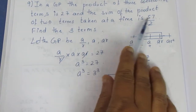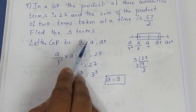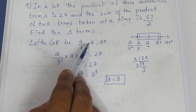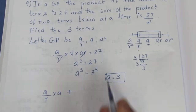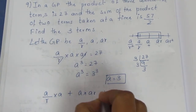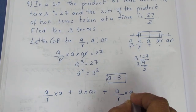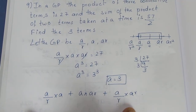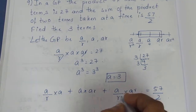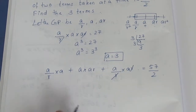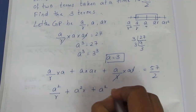Now that we know A, let's look at the sum of the product of the two terms. We multiply the 2 terms pairwise: A by R into A, plus A into AR, plus A by R into AR. This sum is equal to 57 by 2.